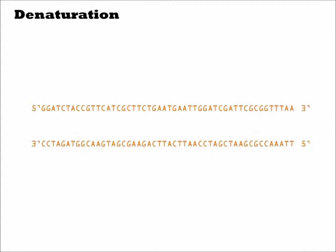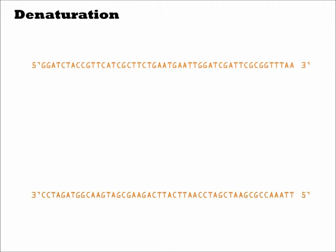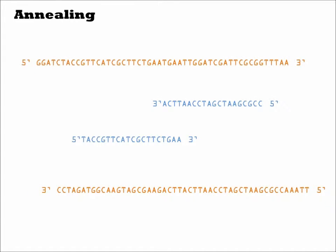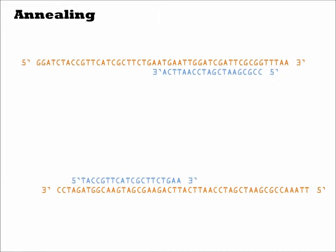During the denaturing phase, the DNA separates into its individual strands. When the temperature is lowered during the annealing phase, the primers anneal to the homologous sequence in the template strands.